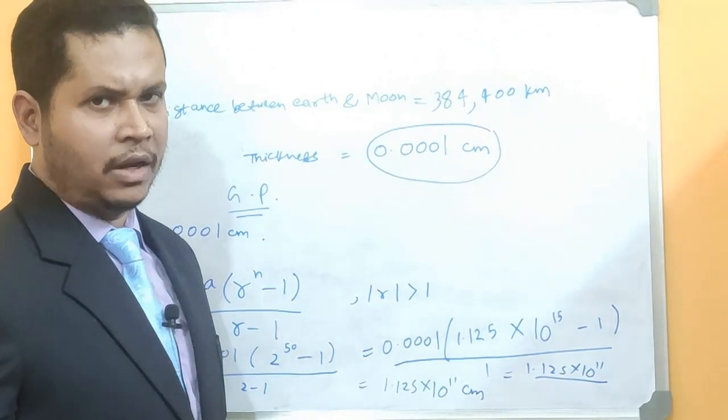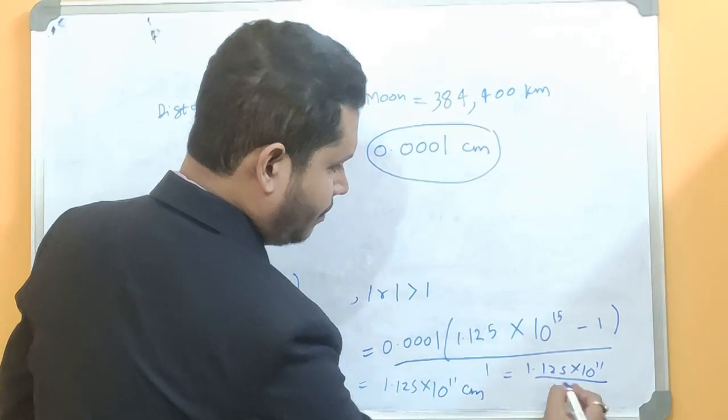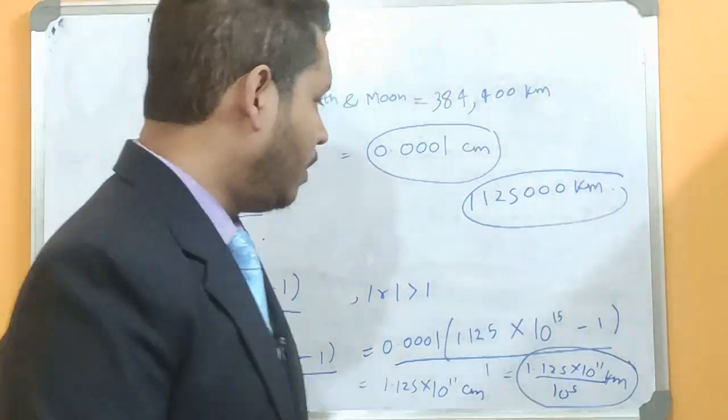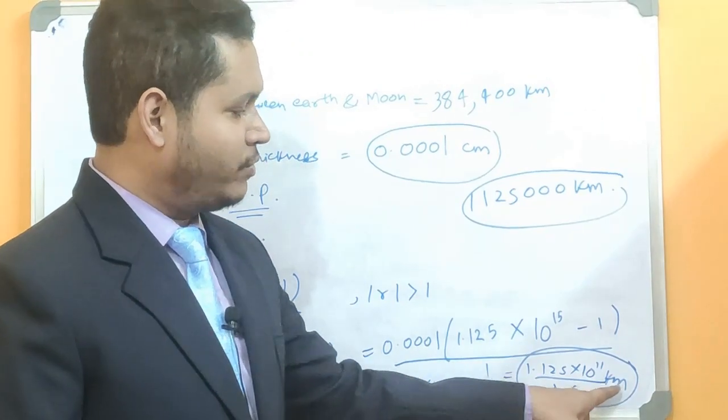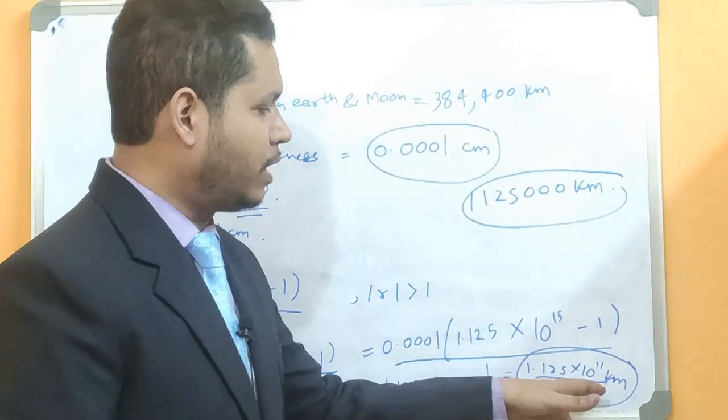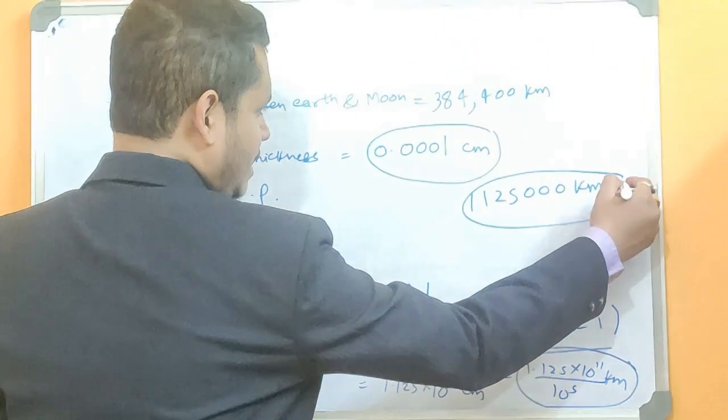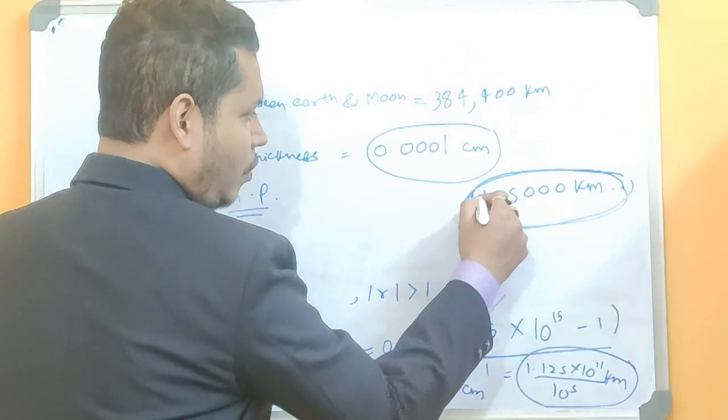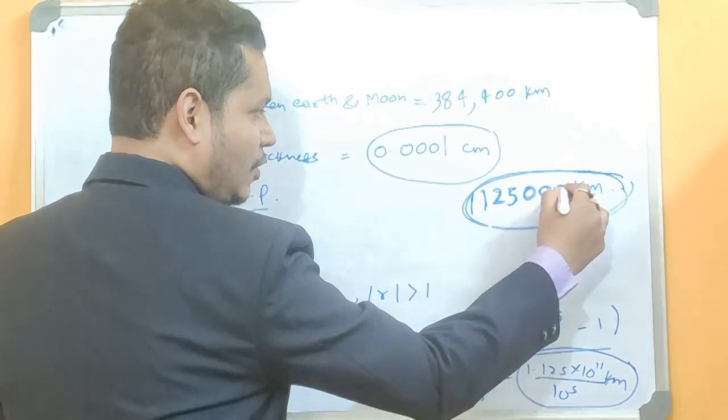And meter to kilometer, another thousand. So that means you just divide by 10 to the power of 5, right? Now calculate. So you are dividing this by 10 to the power of 5 to convert to kilometer. You can do it in the calculator. So you are going to find in kilometer something like this. So it's 1, 1, 2, 5, 0, 0, 0 kilometer.